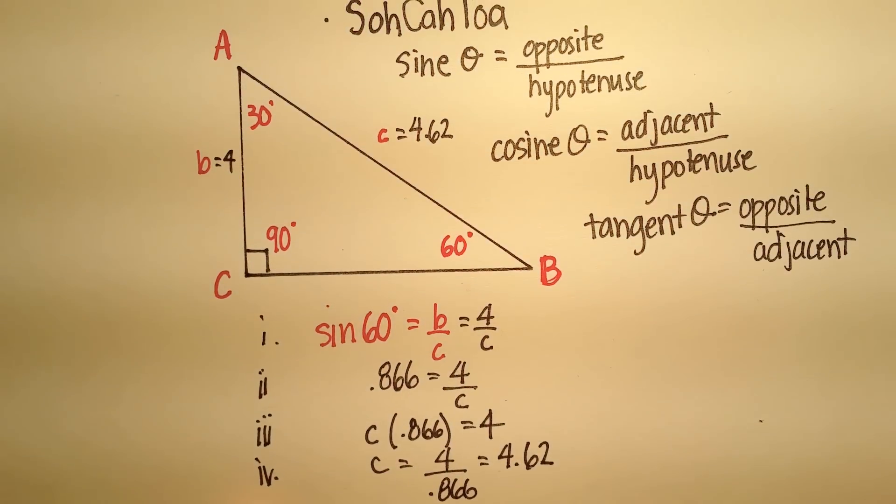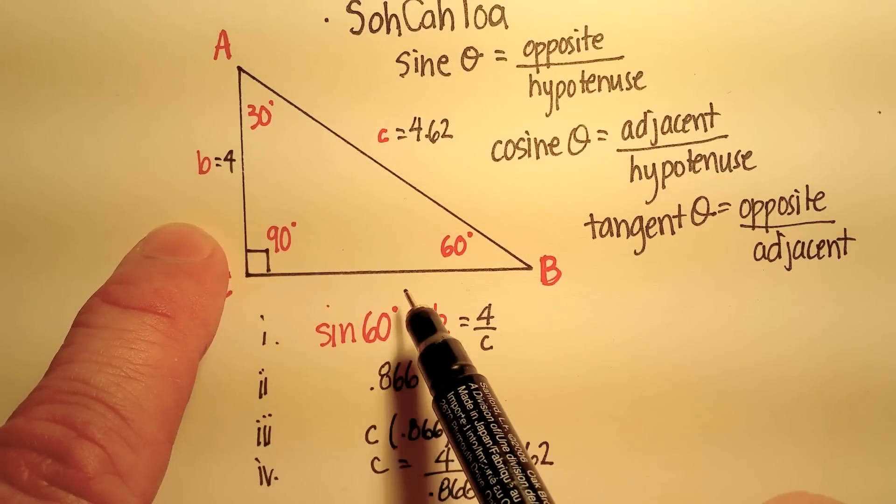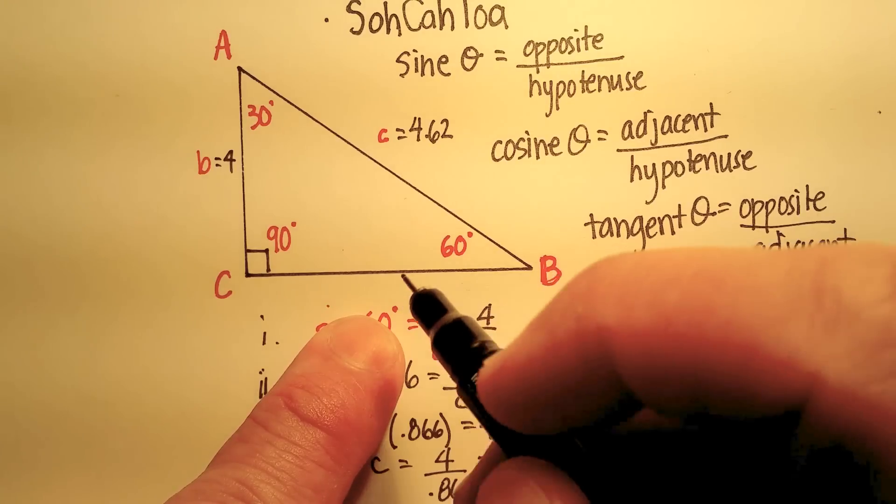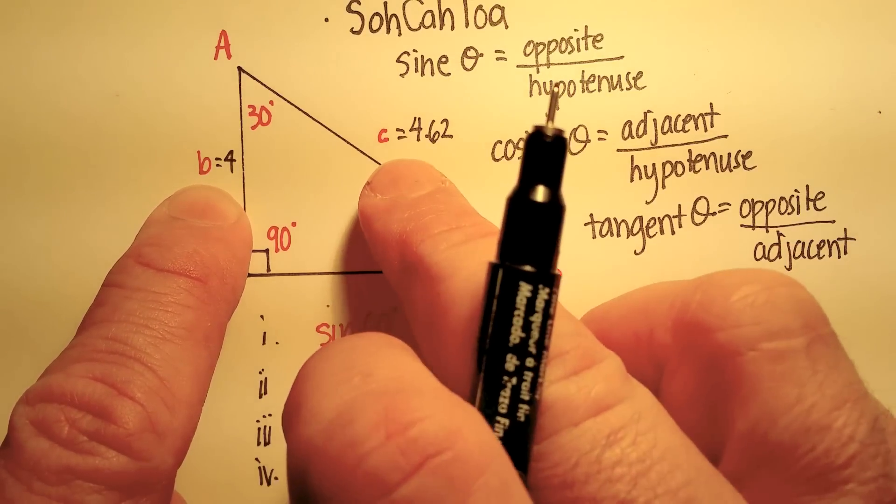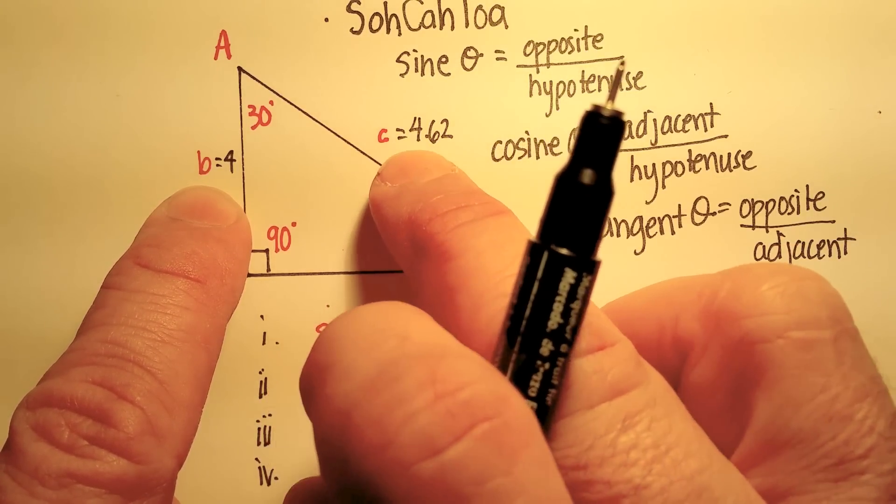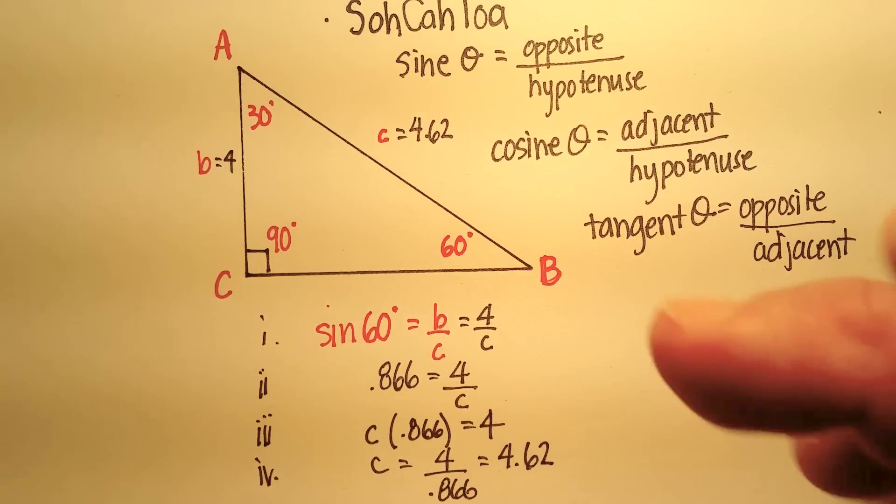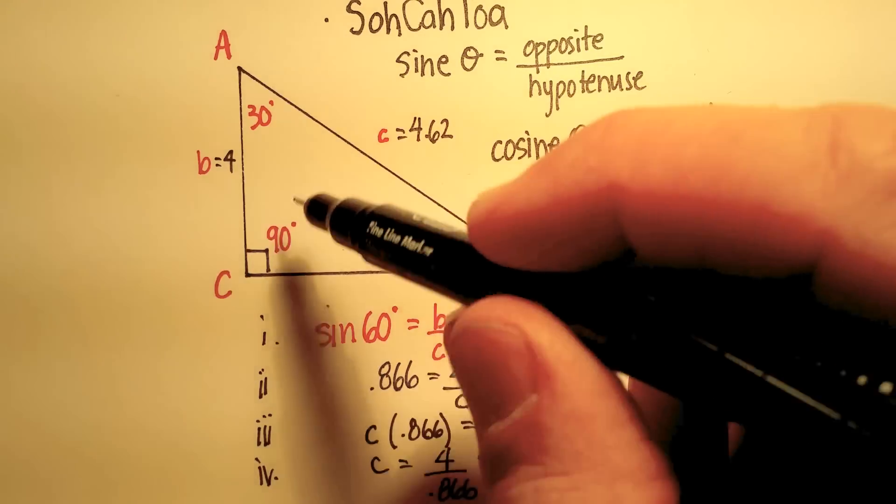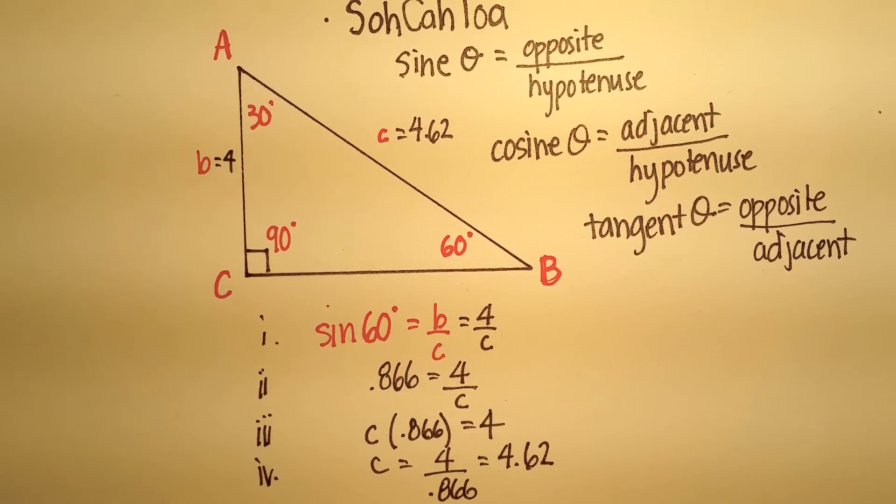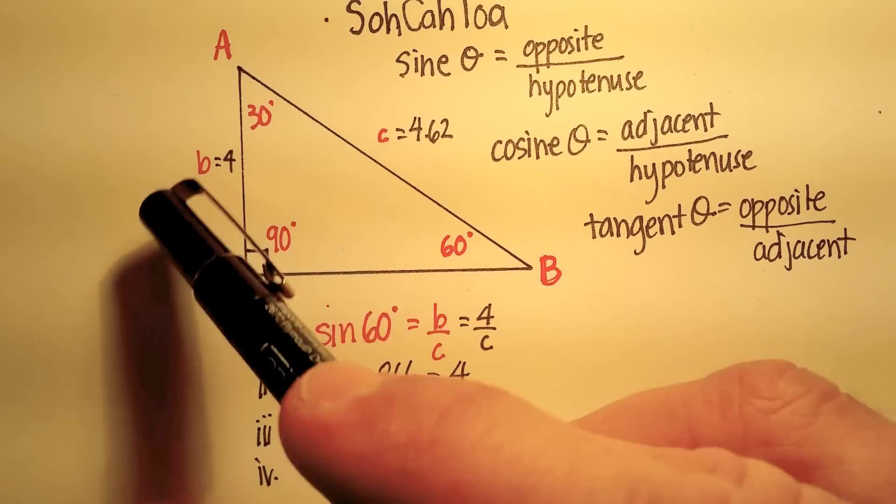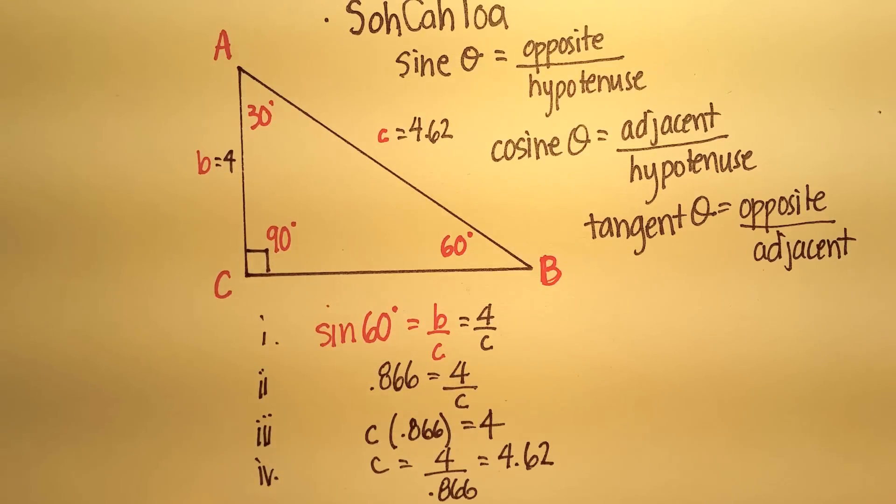And now look what we can do. We can actually use the Pythagorean theorem again and say that this side, which is little a, plus this side, which is 4 squared, will be equal to c, which is 4.62 quantity squared, just simply by using a trig ratio and by knowing what the angles were inside. And you can do that with any of these angles.